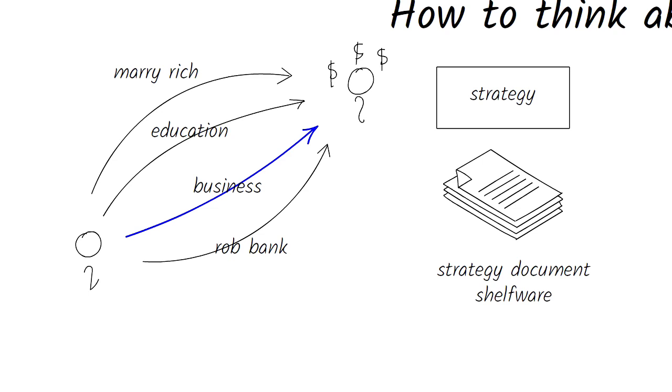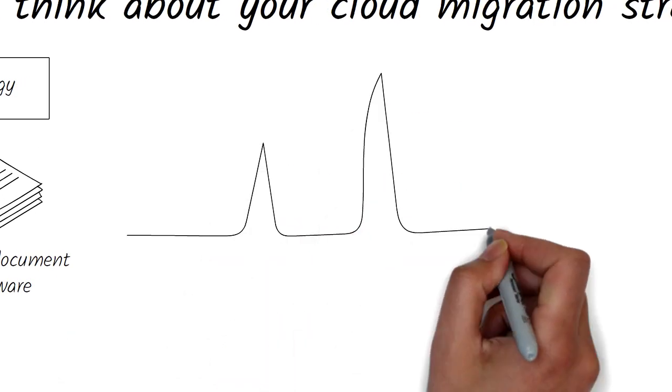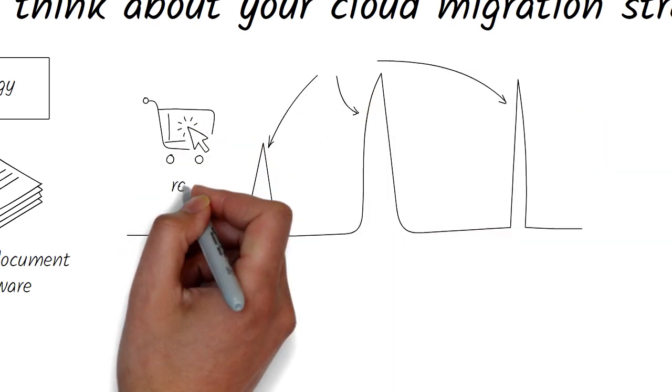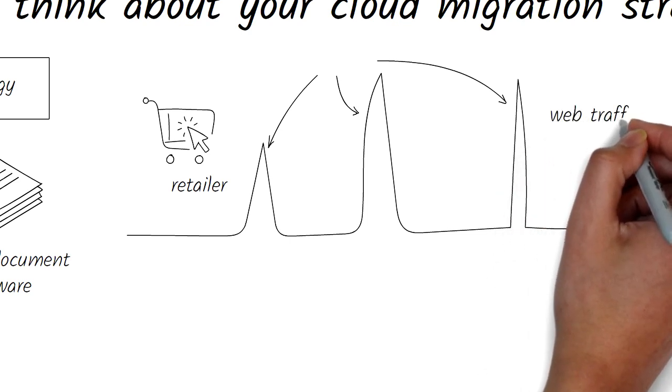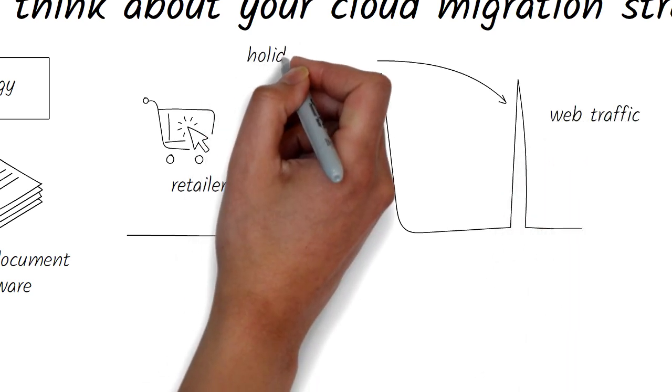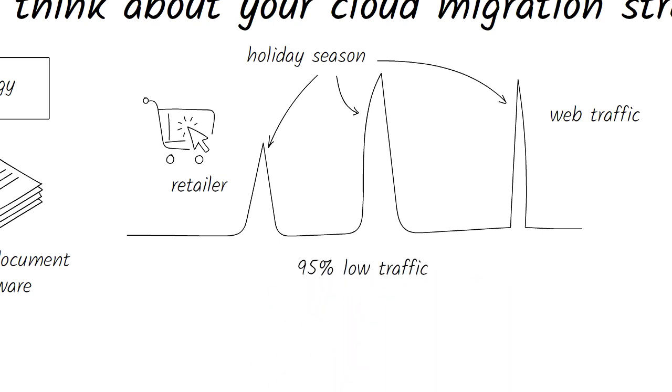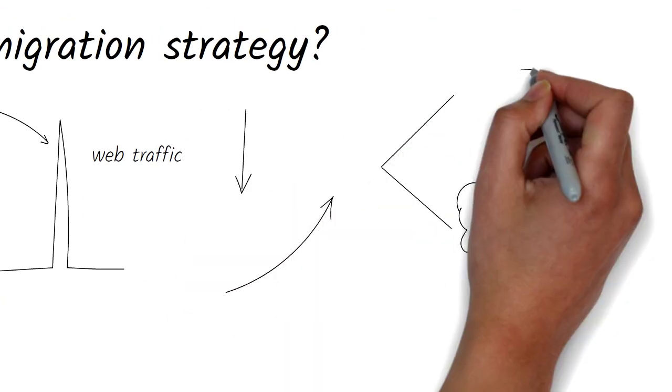Say you're a retailer. Your web traffic goes up during holiday seasons and you want to be able to meet the demand. If you have your own IT, then you have to invest in enough IT to take you through these holiday seasons. But at the same time, IT will be much underused for 95% of the year. If you don't invest upfront, then you'll lose sales during these holiday seasons.